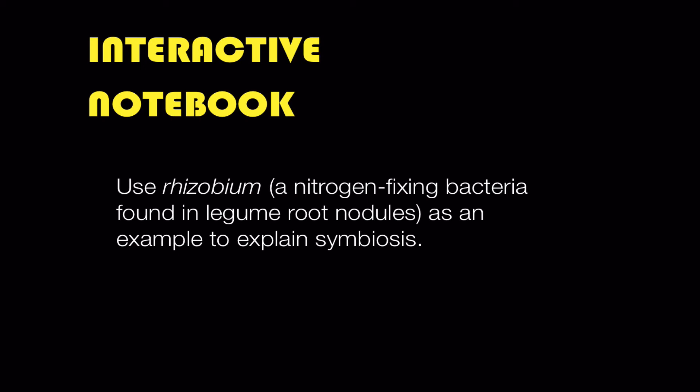All right, now one of these nitrogen fixing bacteria is called rhizobium, and it's the one that's found in association, in this mutualistic association, with legume roots. Can you now explain, use rhizobium as an example to explain what a symbiosis is? If you can do that, then you've linked two important concepts: the idea of a symbiosis and the idea of the nitrogen cycle being based in part on the action of bacteria.